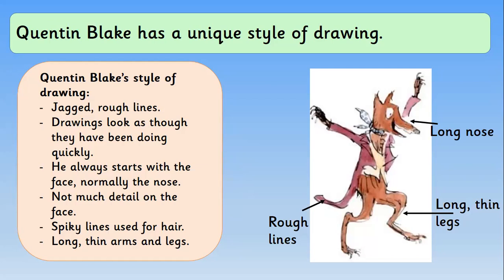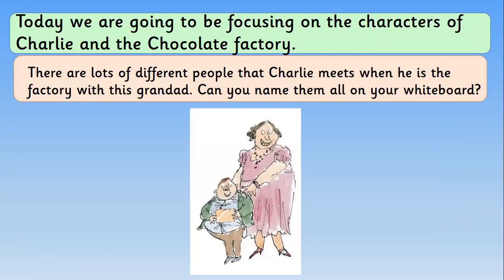Those rough, jagged edges really make the characters come to life. We're going to focus on characters from Charlie and the Chocolate Factory — there are loads of different people that Charlie meets in the factory with his grandad. I hope you've seen at least the film, but hopefully you've read the book too. Get your whiteboard and pen and try to name the characters as they come up. So who is this character? They're holding their golden ticket, they're quite a large boy, and he looks like he could be a little bit silly. Write their name on your whiteboard please.